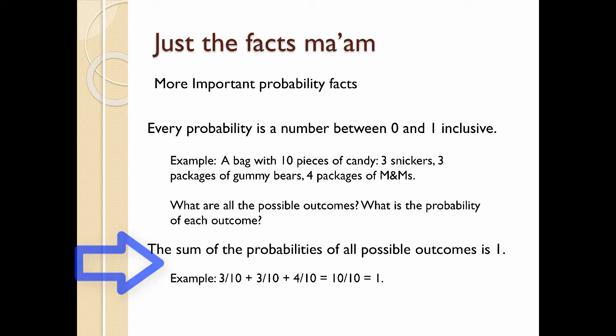So in our bag, if you said that there is a probability of picking a Snickers is three out of 10. For gummy bears, three out of 10. For M&Ms, it's four out of 10. If we add those up, we get 10 out of 10. That covers all the candy, and that's equal to one. So the sum of the probabilities of all possible outcomes is one.